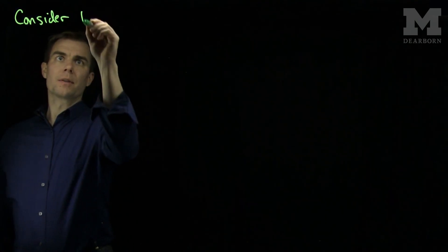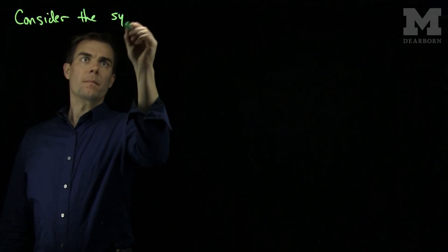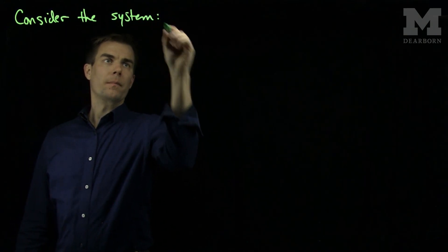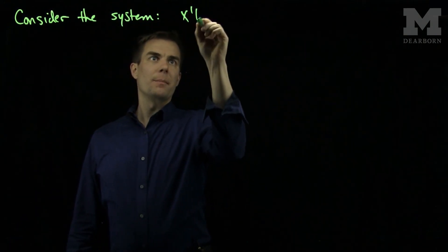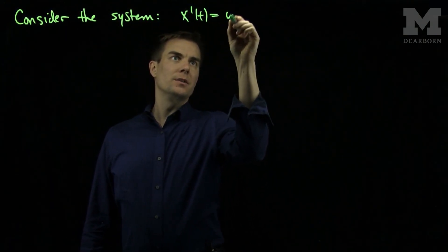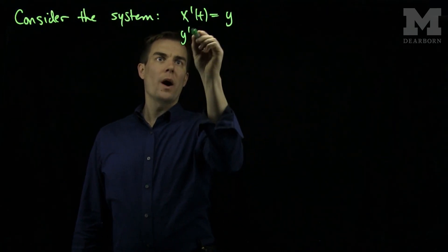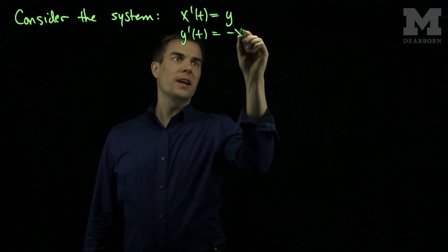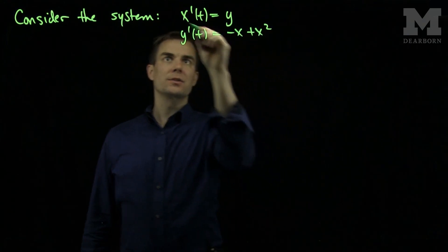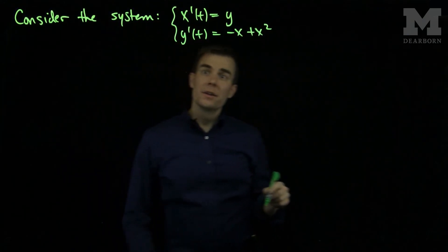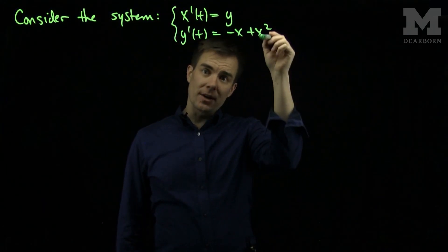Let's consider the system x'(t) = y and y'(t) = -x + x². This is a nonlinear system since I have this x squared term.